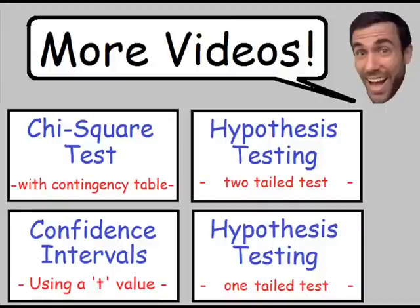I hope this video gave you a better idea of how to perform a chi-square test. I do have another chi-square video that uses a contingency table — the link is in the top left corner. Links for my hypothesis testing videos are on the right, and my confidence interval video is on the bottom left. Thanks so much for watching, and I'll see you in my next one.